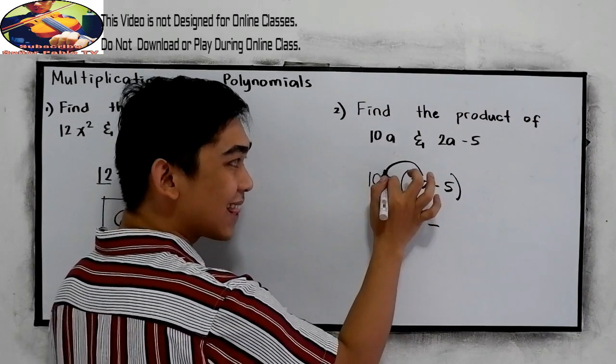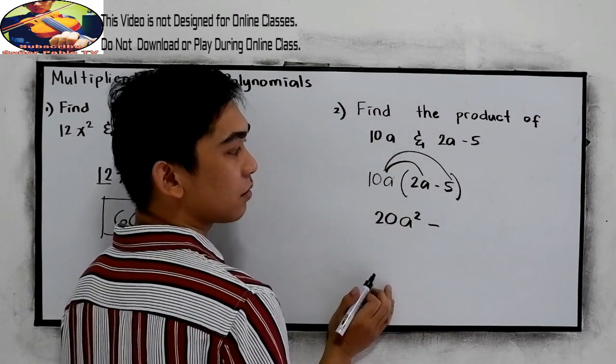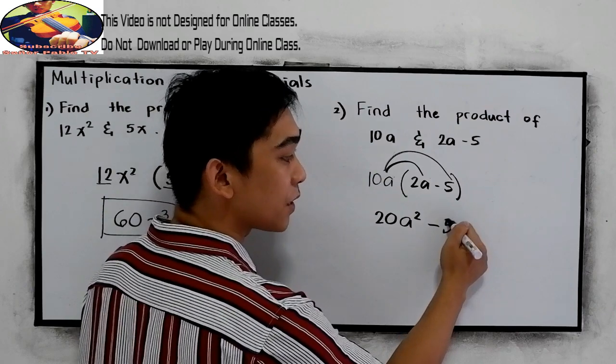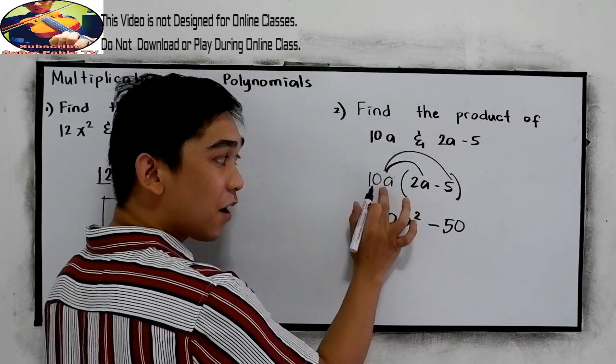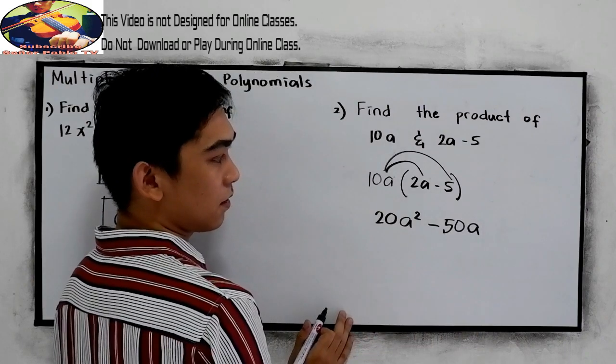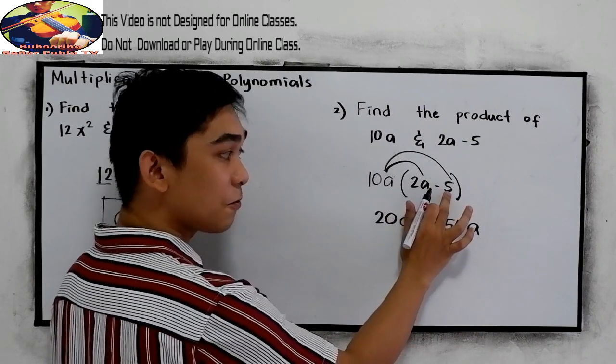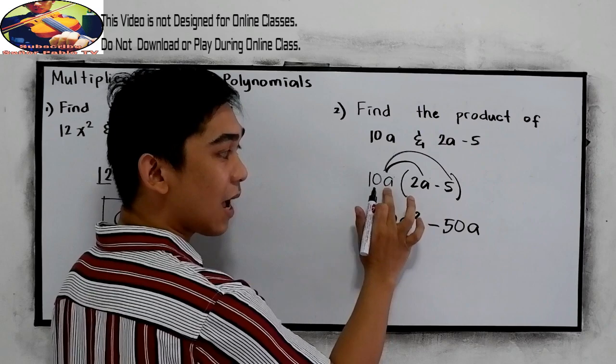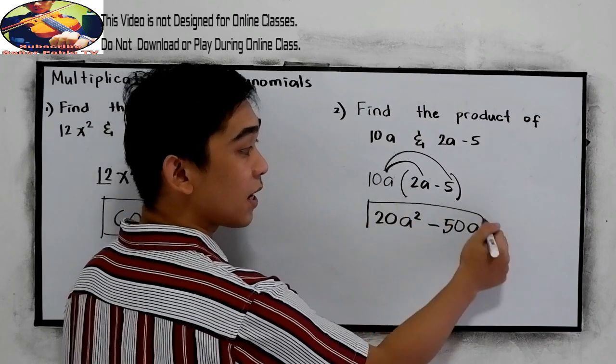Minus 10 times 5, that is 50. We have a variable, which is a. So write a. And times negative 5, we get negative 50, and copy the variable. This will be the answer.